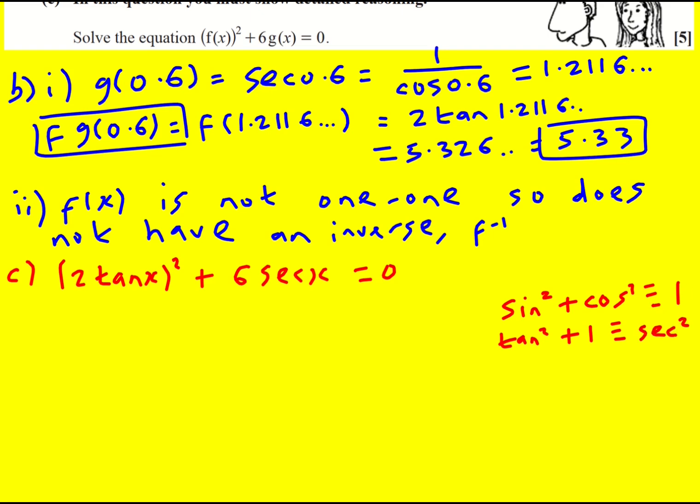So now I can create a quadratic in sec², sorry. So it's going to be 4tan². It does say show detailed reasoning. Sorry, I'll put this step in. Well, I can divide through by 2. So I'm going to do that. And then tan² is going to become sec²(x) - 1.